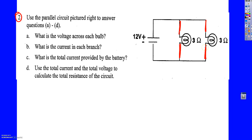And because it's parallel, the voltage will be the same at each branch. So it'll be 12 volts here and 12 volts here. So my total voltage is just 12.